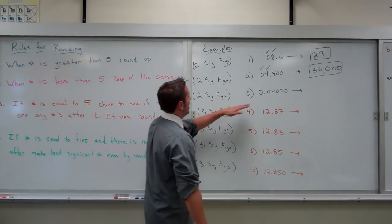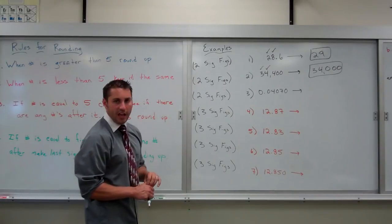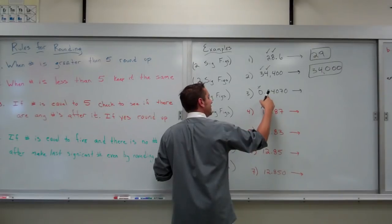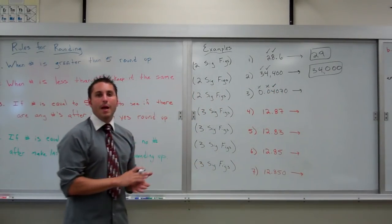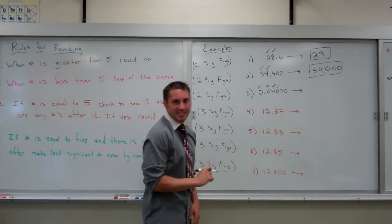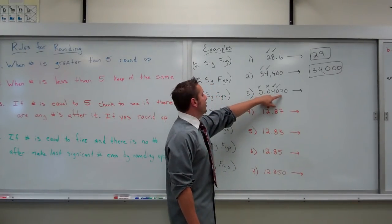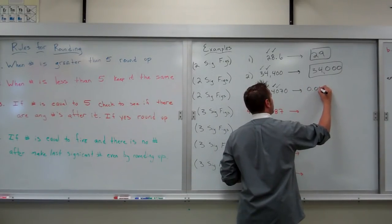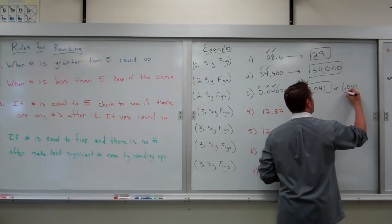The next example is 0.04070, and we need two sig figs. We start counting sig figs from the first non-zero. The leading zeros do not count — it's a decimal number smaller than one. Does the 4 count? Yes. And remember, as soon as you hit the first non-zero in a decimal, everything after it counts, even if it's a zero. So that zero after the 4 also counts. There are my two sig figs. There is a 7 after the zero, and seven is greater than five, so it rounds up. We write this number as 0.041.